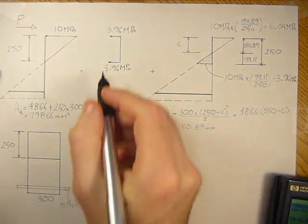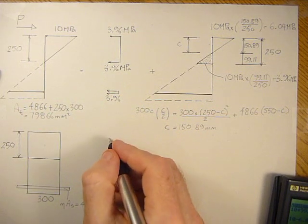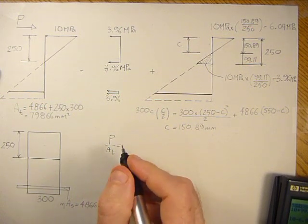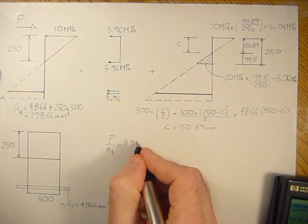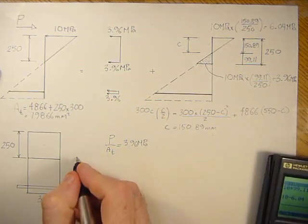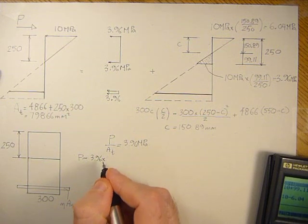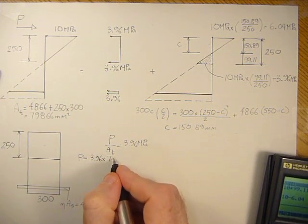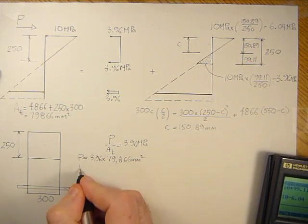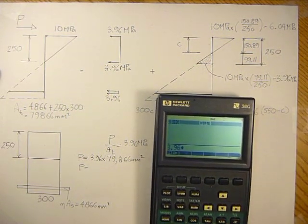Now we can find out what the axial stress is on the section. It's going to be P over area transformed equals 3.96 MPa. So P is going to equal 3.96 MPa times 79,866 square millimeters.